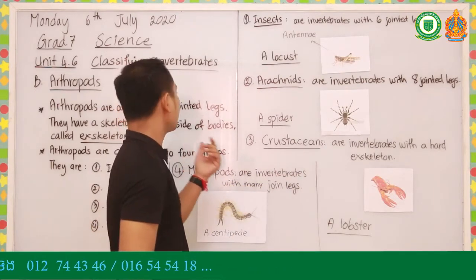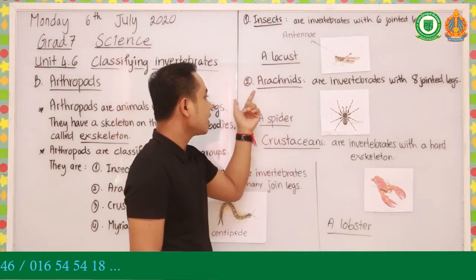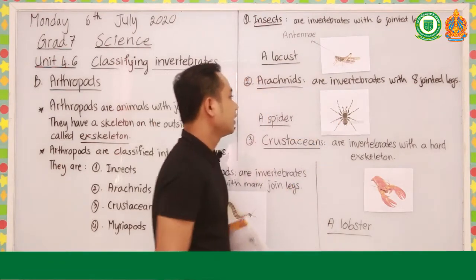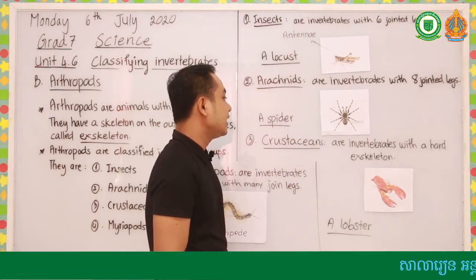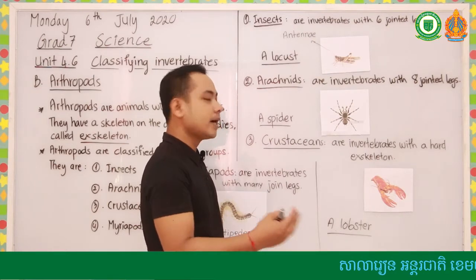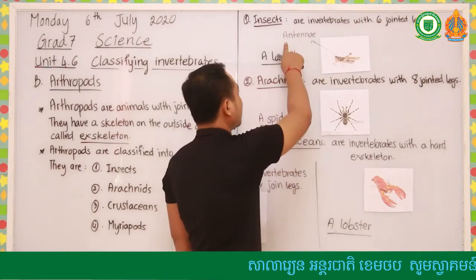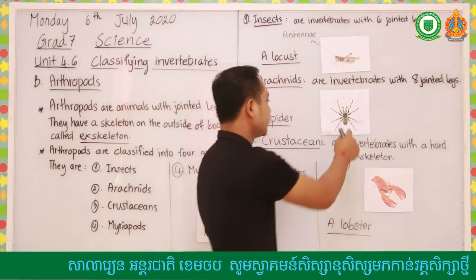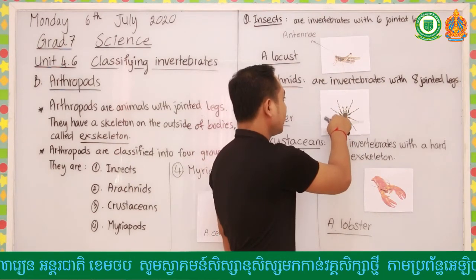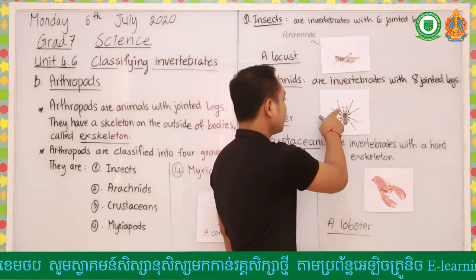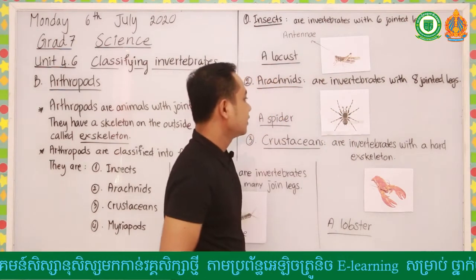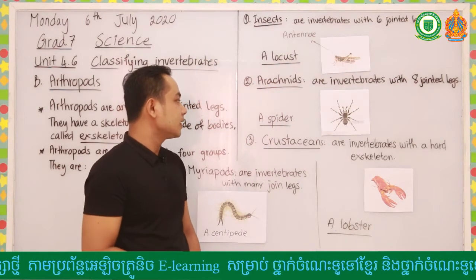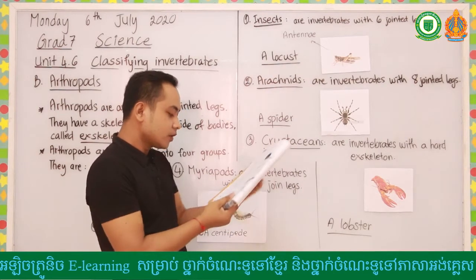The second group is arachnids. Arachnids are invertebrates with eight jointed legs. You can see in this picture - a spider has eight legs, no wings, and no antennae, and the body is not segmented. You can count the legs: two, four, six, eight. Arachnids are invertebrates with eight jointed legs.